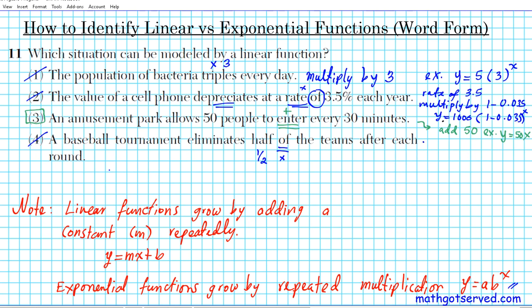So in option four, what's happening is that we are going to be multiplying by one half every single time. So option one is exponential, two is exponential, three is linear, and four is exponential. So let's take a look at an example of what option four looks like.